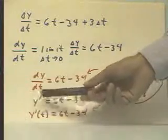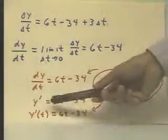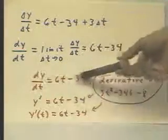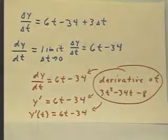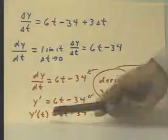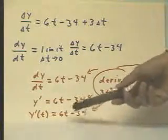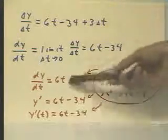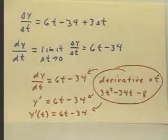We sometimes write y prime, that's y with an apostrophe read y prime, and that equals 6t minus 34. This says the same thing. This is a notation that can be interchanged with this one. And sometimes we even emphasize the functional aspect and say y prime of t equals 6t minus 34. Any one of these can be used in any combination. They're all valid ways of saying the same thing.